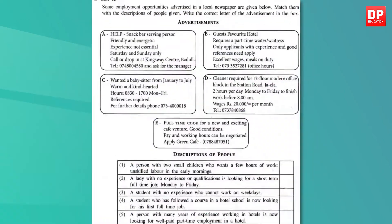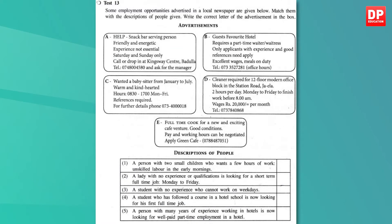Now that we have read the advertisements, let's complete the task and match the descriptions. One: a person with two small children who wants a few hours of work, unskilled labor, in the early mornings — this would be perfect for D, the cleaner, who has just two hours of work a day. Two: a lady with no experience or qualifications looking for a short-term full-time job, Monday to Friday — this fits C, where a babysitter is wanted for a short term from January to July. Three: a student with no experience who cannot work on weekdays — this matches A, the snack bar serving person, no experience needed, Saturdays and Sundays only.